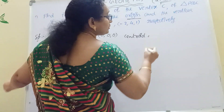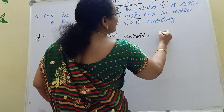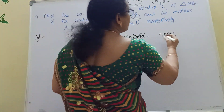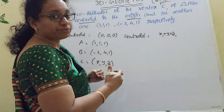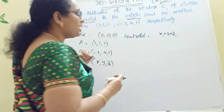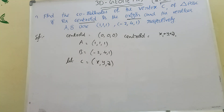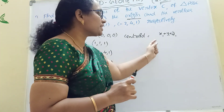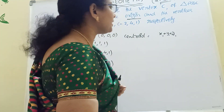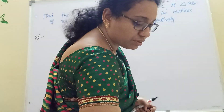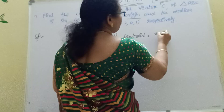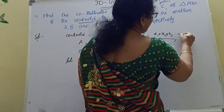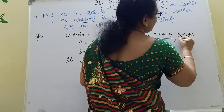You know this from 10th class. Centroid formula: what is the formula? x1 plus x2 plus x3 divided by 3. Right? That's the formula. x1 plus x2 plus x3 by 3. Like that, y1 plus y2 plus y3 by 3. And z1 plus z2 plus z3 by 3. And then we apply the formula: x1 plus x2 plus x3 by 3, y1 plus y2 plus y3 by 3.